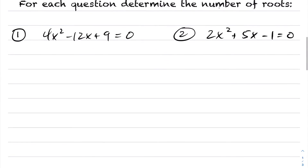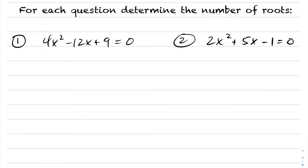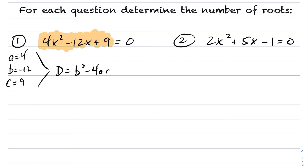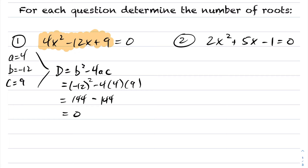Let's look at our first example: determine the number of roots. This quadratic is in standard form, so my a value is 4, my b value is negative 12, and my c value is 9. I don't want to find the roots themselves — I just want to know the type of roots. Substituting into the discriminant: (−12)² minus 4(4)(9) = 144 minus 144 = 0. Because my discriminant is zero, I have exactly one root.